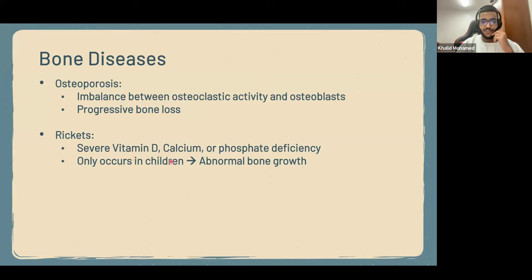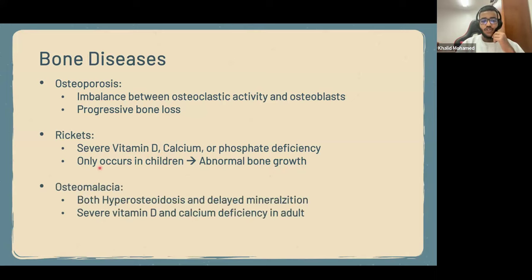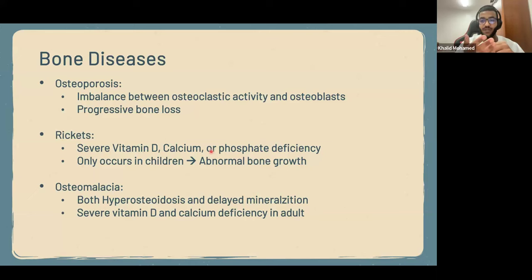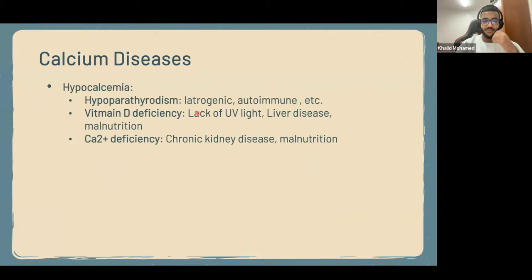Osteomalacia is severe vitamin D and calcium deficiency in adults, after puberty. It is characterized by areas of hyperosteosis — excess bone mineral in some parts — alongside delayed mineralization in other parts. We'll discuss osteomalacia further in the next lecture. Regarding calcium diseases: we have hypocalcemia and hypercalcemia.